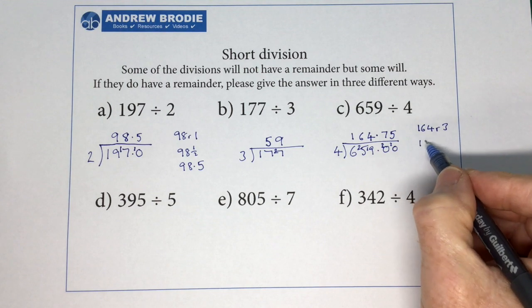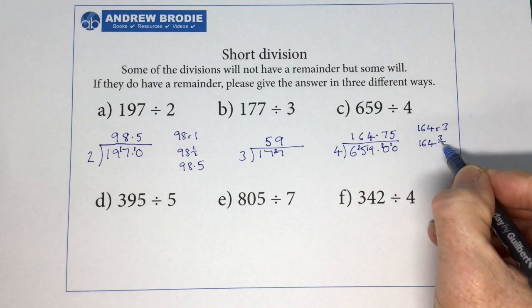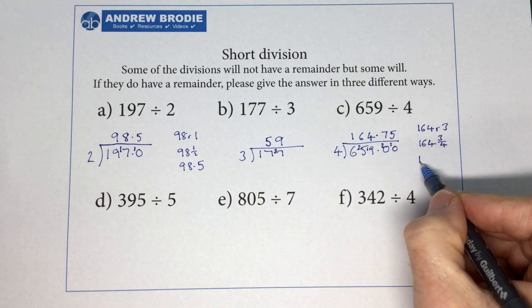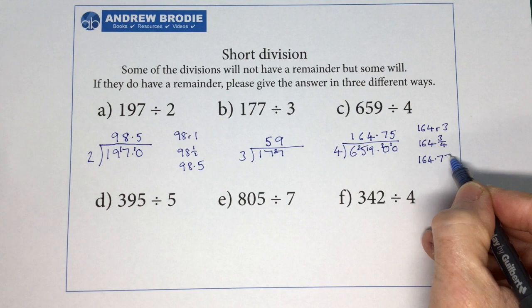Or we could have 164 with that 3 over the 4. 164 and 3 quarters. Or 164.75.